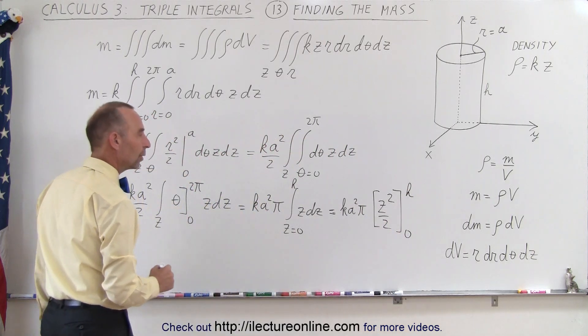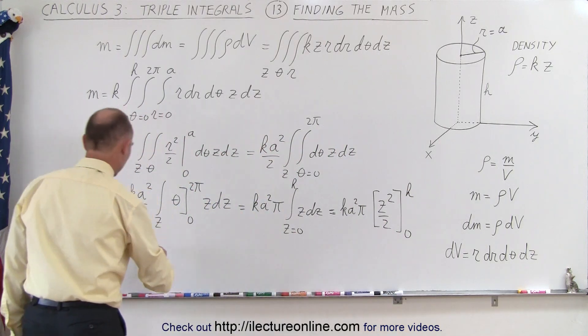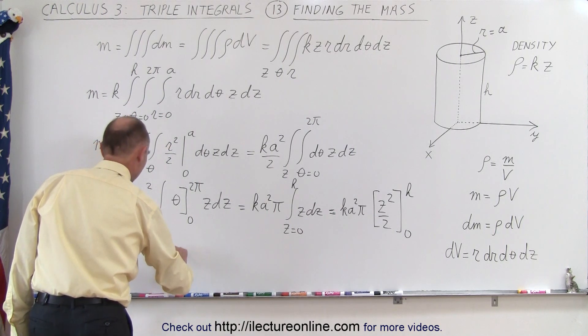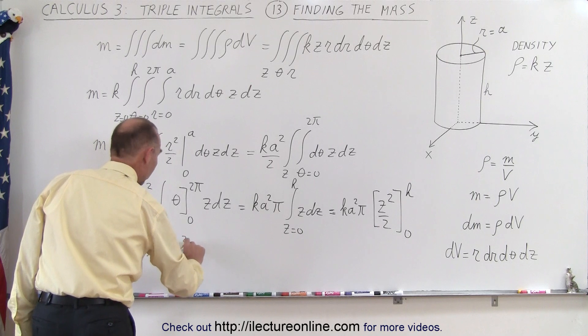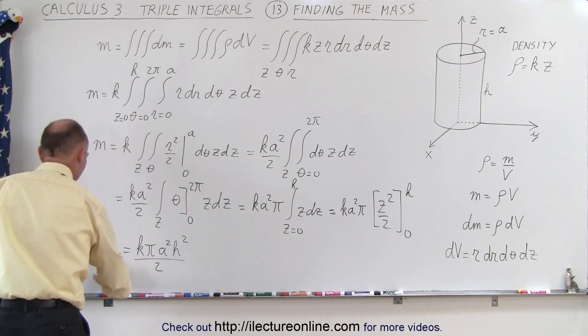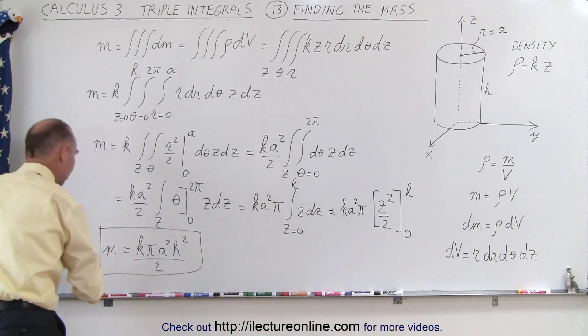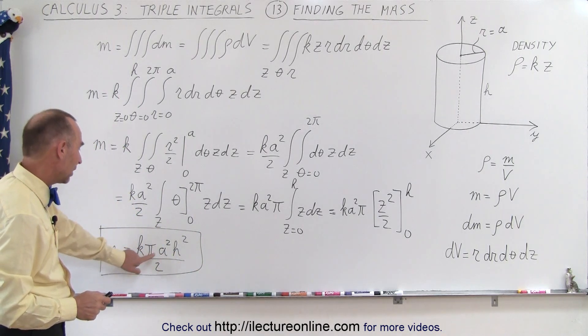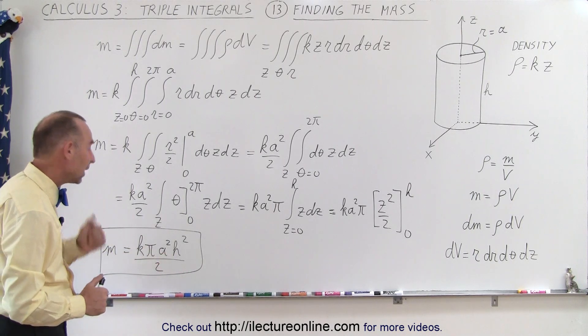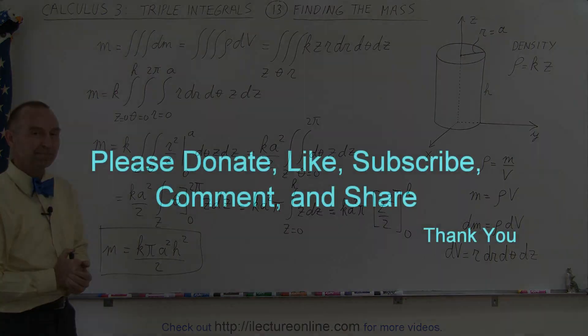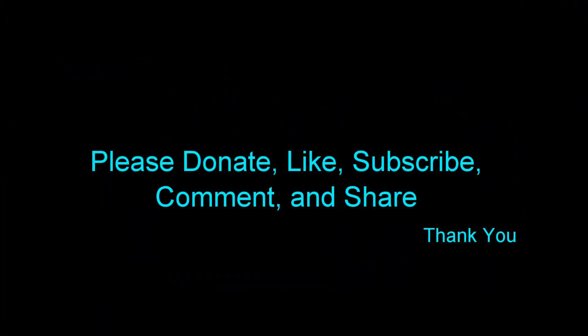We plug in h we get h squared over 2, so this becomes equal to k π a squared h squared divided by 2. That would be the mass of that cylinder with the variable density. Let's take a quick look: k a squared π h squared divided by 2, yep that should be it, and that's how we do that. Thank you.